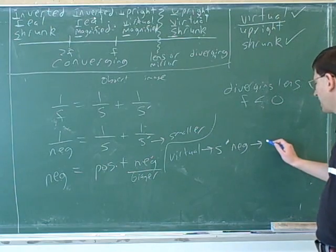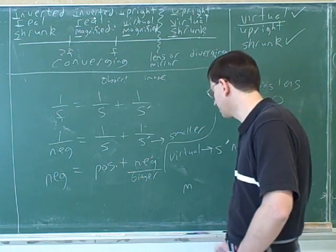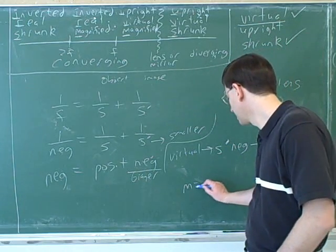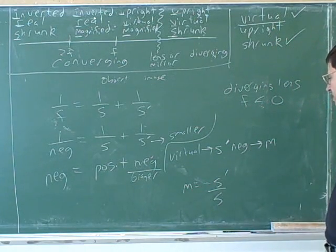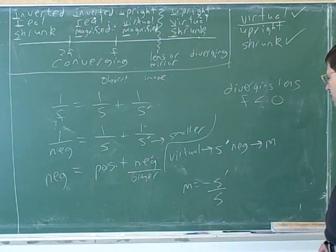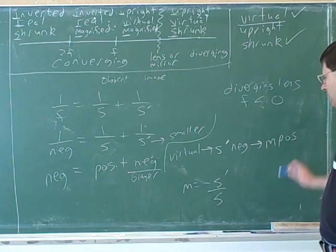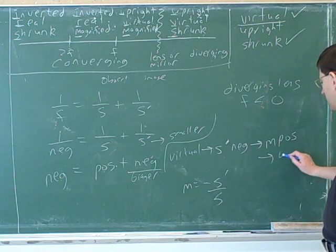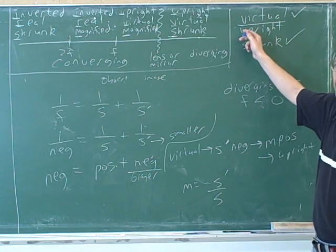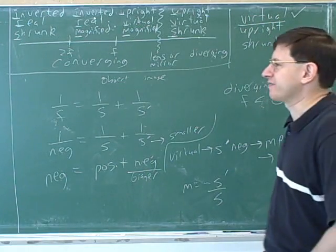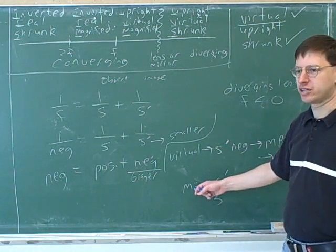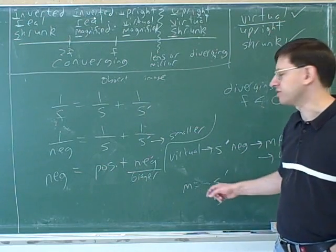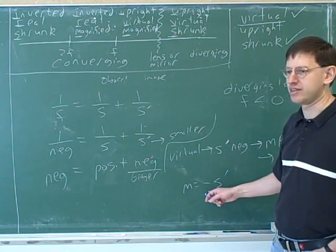What does that tell us about the magnification? The full formula for magnification including signs is negative S prime over S. If S prime is negative, then when you plug it into the equation, M will be positive. And when the magnification is positive, that means the image is upright. That's why we learned the memory aid 'ultraviolet' — upright always goes with virtual. You might not get full credit if you just say 'it's upright because of ultraviolet.' This comes from the magnification equation. Earlier we focused on magnitudes, but sometimes you need the signed version, and the signed version has a negative sign.